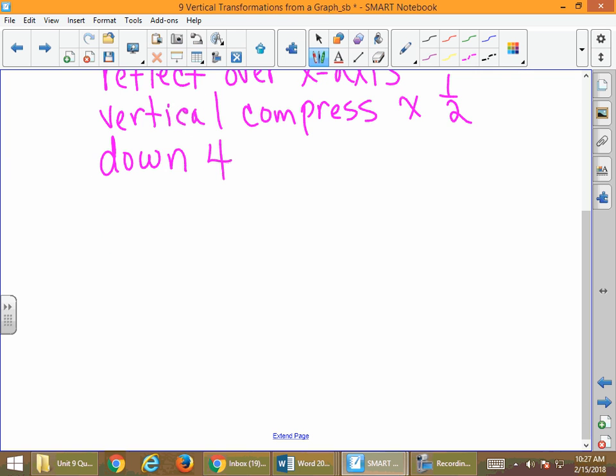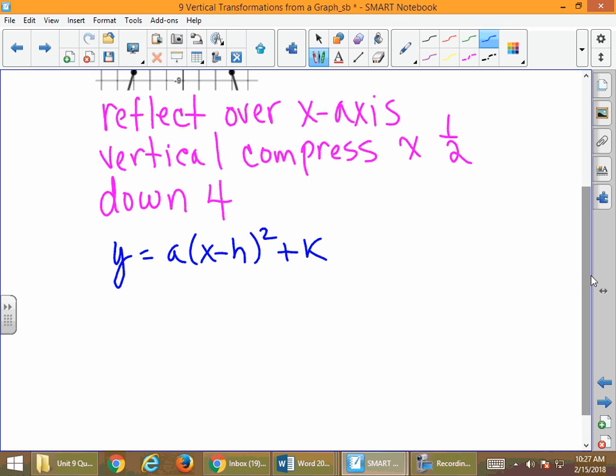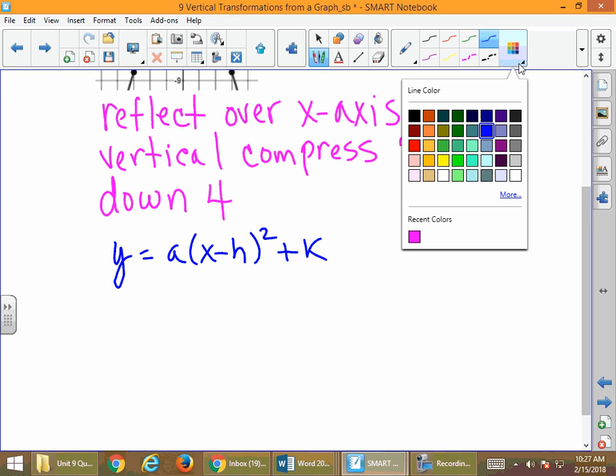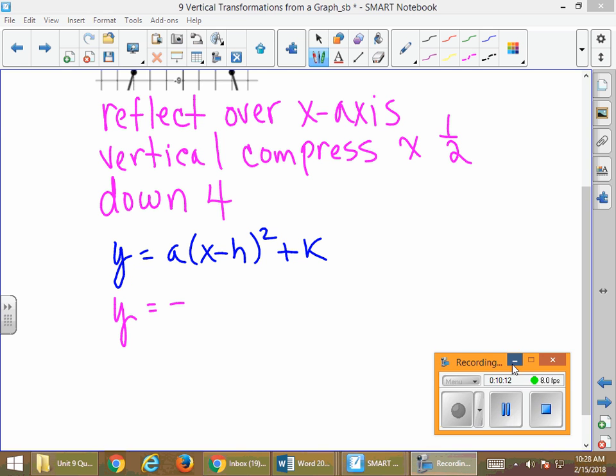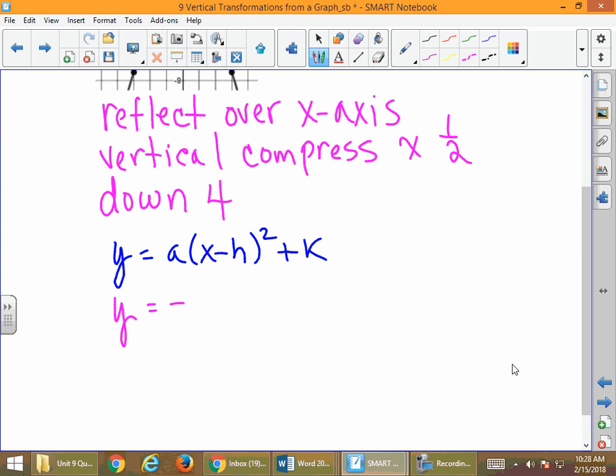How do we write this equation in vertex form? Just a reminder, that vertex form is y equals a times x minus h quantity squared plus k. When we reflect, we write this with a negative in front of the function. So the reflection is the negative, the vertical compression is one half.